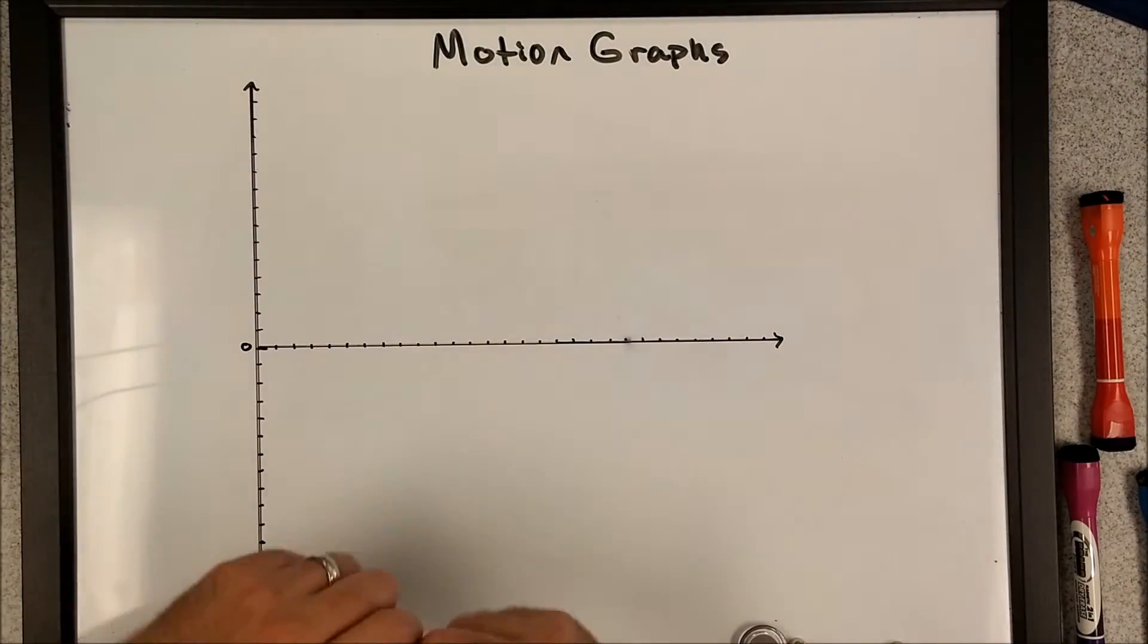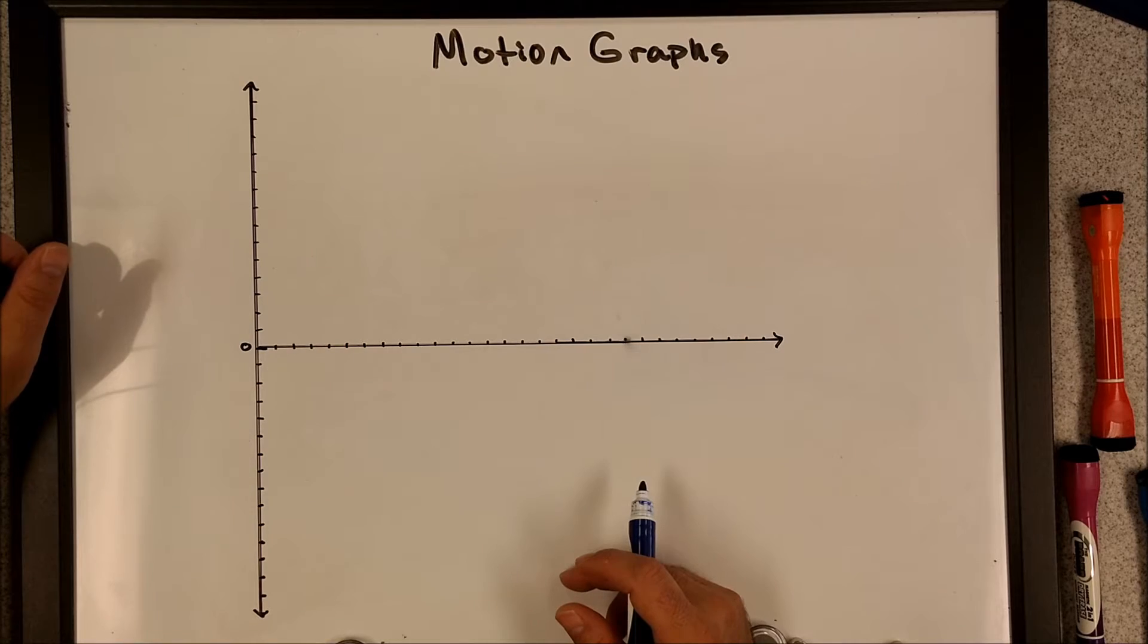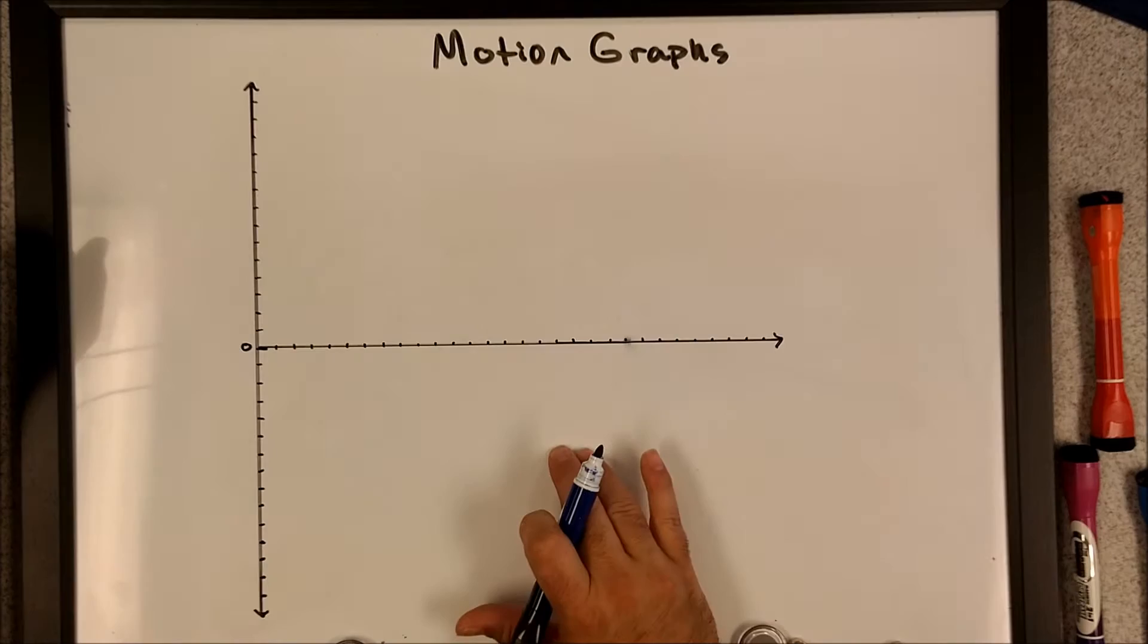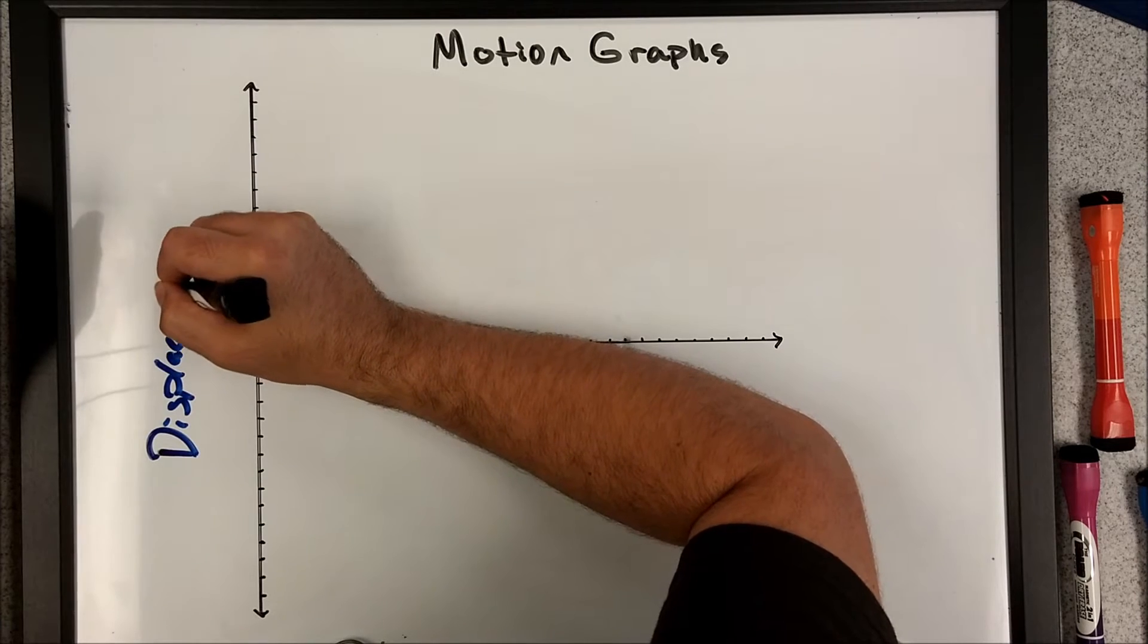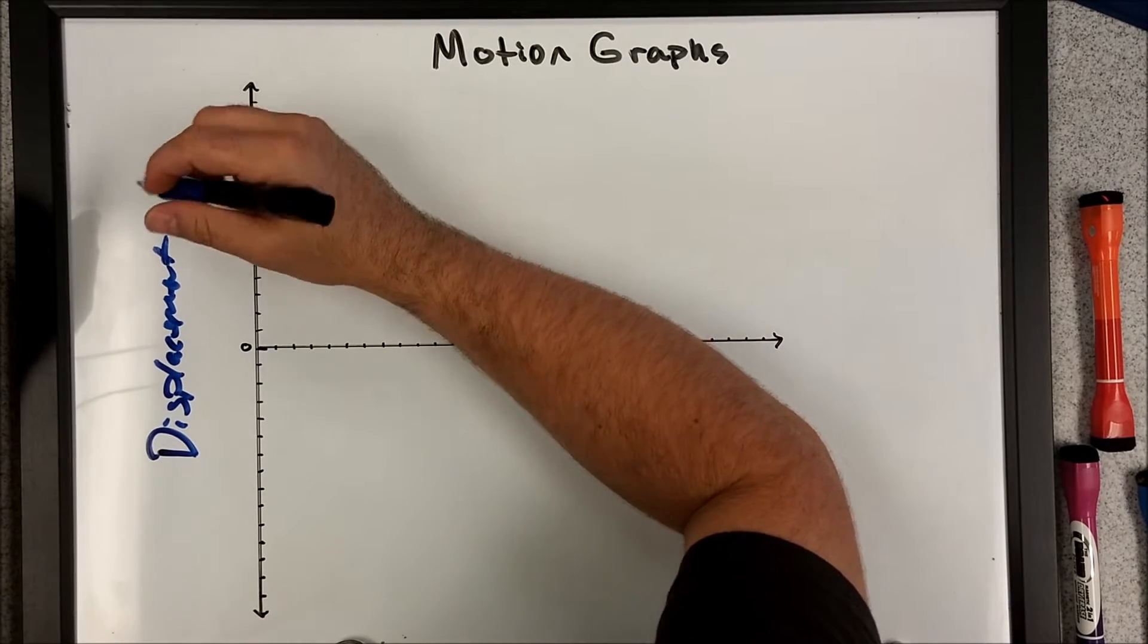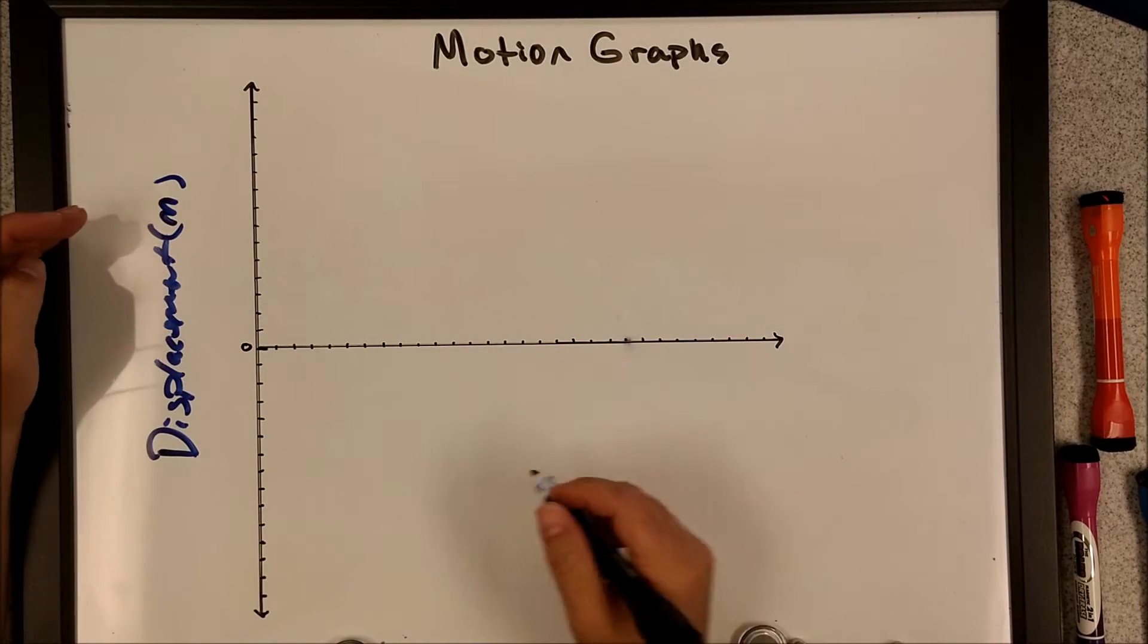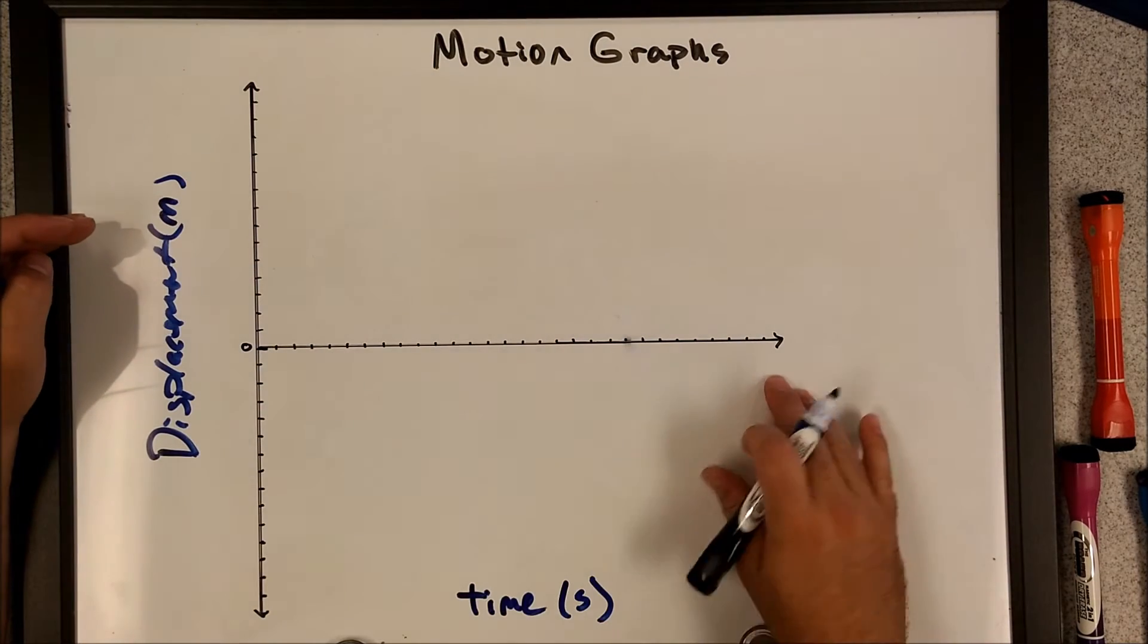So the first type of motion graph that I want to deal with is going to be a displacement time graph, or a position time graph, and it's going to be a displacement variable on the y-axis and a time variable on the x-axis. So I'm going to go ahead and write that out here. Displacement. I know my penmanship is grand right now, and your units for displacement is the meter, and that's going to be on my y-axis here, and then this is going to be time. I'm going to write this down here so I'm not fudging with my numbers. Time is in seconds.